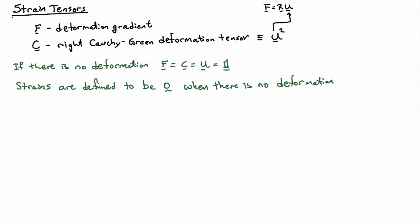So to define strain tensors in finite deformation, what we do is we look at manipulations of the tensors that we already have, and we set up those manipulations such that the new tensors will be equal to zero when there is no deformation.